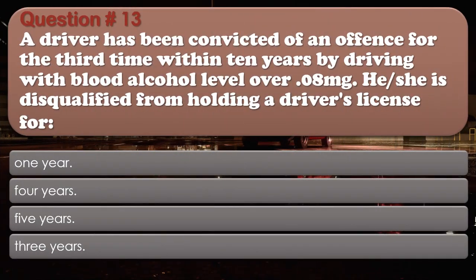Question number 13. A driver has been convicted of an offense for the third time within 10 years by driving with a blood alcohol level over the limit. He or she is disqualified from holding a driver's license for: One year. Four years. Five years. Three years. The correct answer is: Five years.